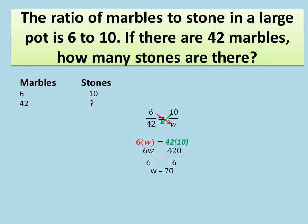When we divide 6 by 6 we get 1, and 1W is the same as just W. So W = 70. That's our final answer — there are 70 stones in the bag. You can check this intuitively: the ratio for stones is greater than for marbles, so the total number of stones has to be greater than the total number of marbles, which is confirmed since 70 is greater than 42.